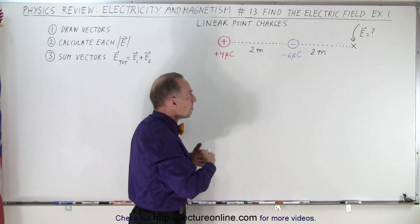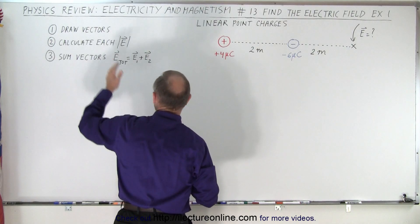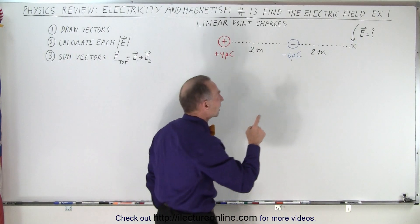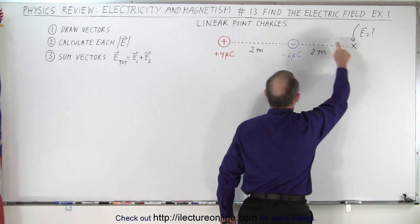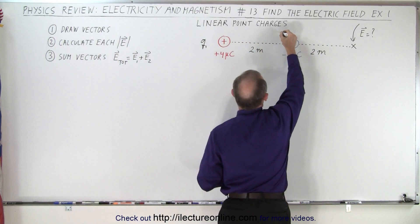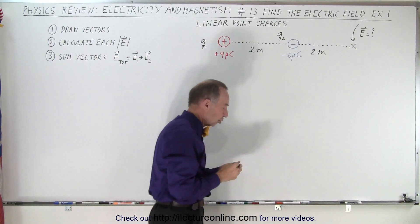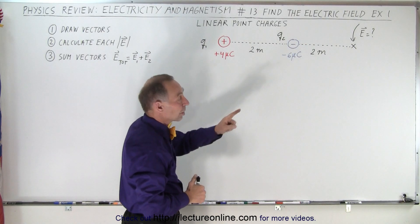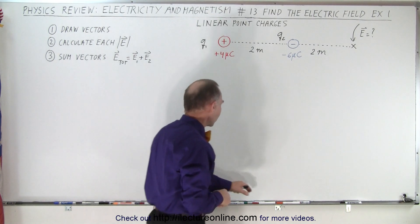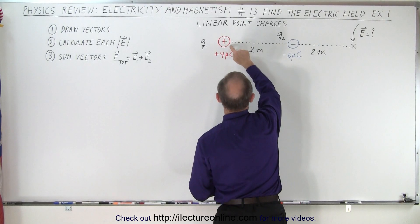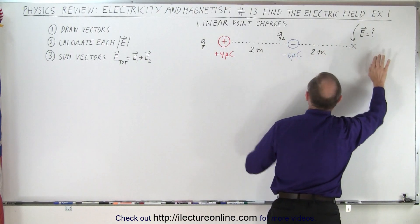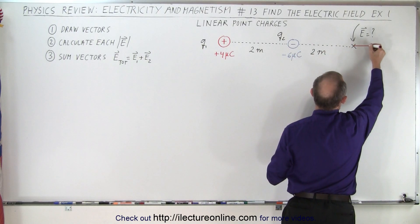What is the methodology? We first want to draw the vectors representing the electric field at the location of interest due to the presence of the charges. Let's say this here is Q1 and this here is Q2. It's always a good idea to label your charges. We can find the vector for the electric field caused by Q1 and the vector for the electric field caused by Q2. The electric field from a positive charge emanates away from the charge, so at this location it would point away from the positive charge.